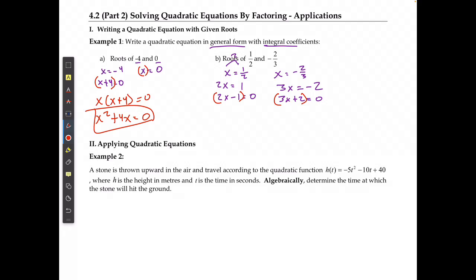So I can state that 2x minus 1 times 3x plus 2 is equal to 0, and when I FOIL this out, I'm going to get 6x squared plus 1x minus 2 is equal to 0. And there's my general form equation.